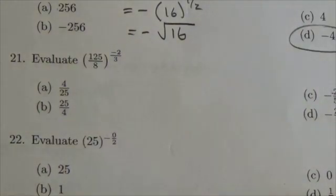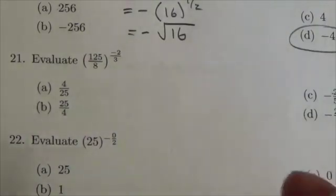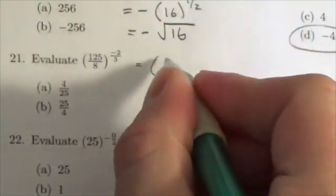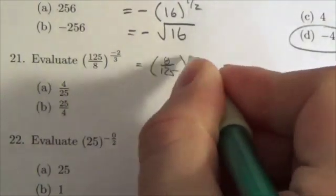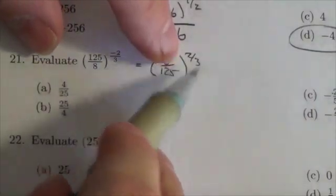I think the first thing we want to do is deal with that negative, because we know what the negative does - it causes a reciprocal. So what's going to happen here is this is going to quickly become just 8 over 125 to the 2 thirds. Now notice that the negative does not reciprocate the exponent.